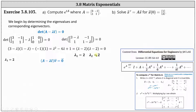From here, if we're not able to find two linearly independent eigenvectors for the eigenvalue of two, we will not be able to use the general procedure, so we'll have to use a different procedure. To find an eigenvector, we set up the equation: the difference of A and lambda I times vector V equals a zero vector, and then determine a vector V.